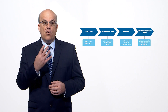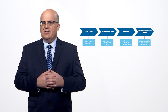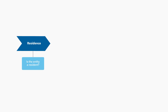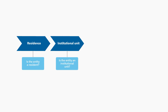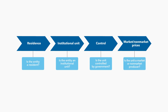We ask four main questions to determine what entities belong in the public sector and where in the public sector they should be classified. First, is the entity a resident of the domestic economy or a non-resident? Second, is the entity an institutional unit? Third, who controls the institutional unit — a government unit, a public corporation, or a private sector unit? And fourth, what does the institutional unit do? Does it provide goods and services on a market or a non-market basis?